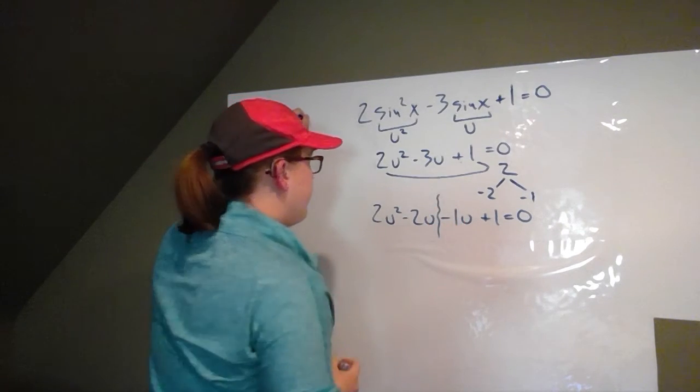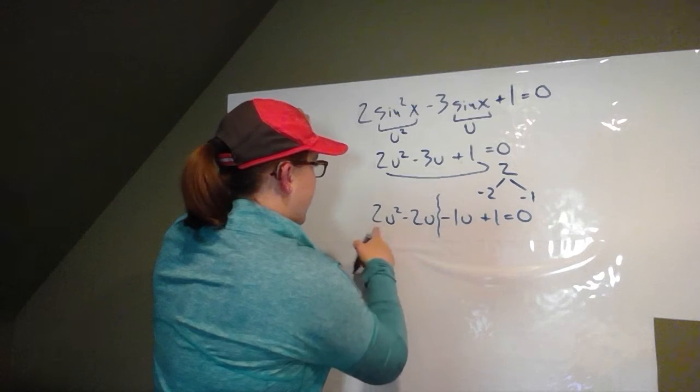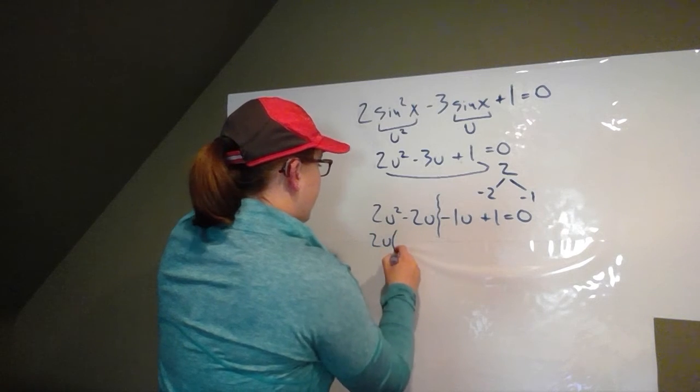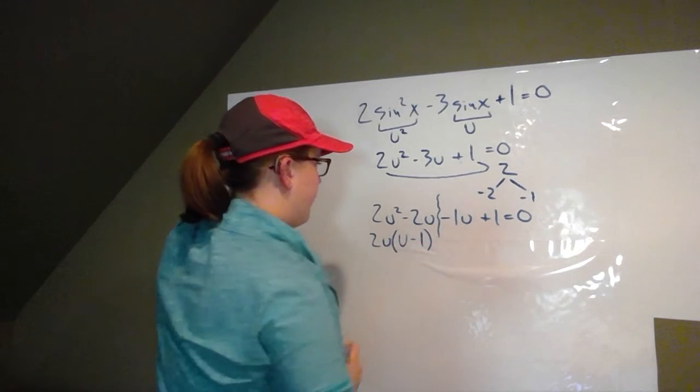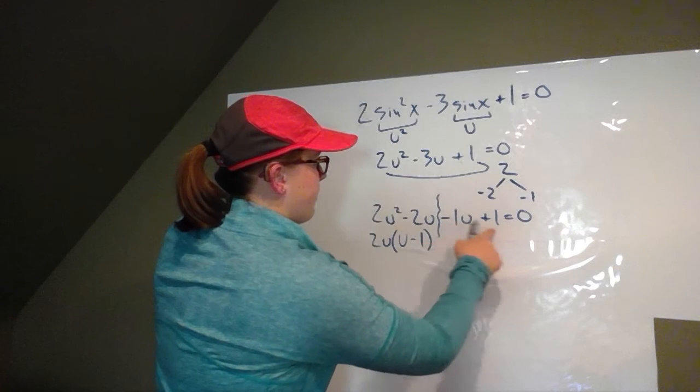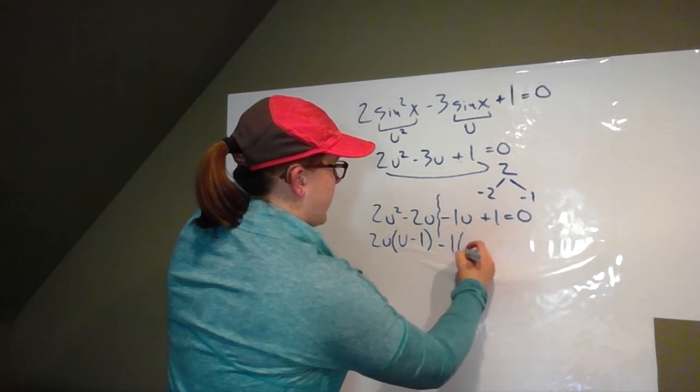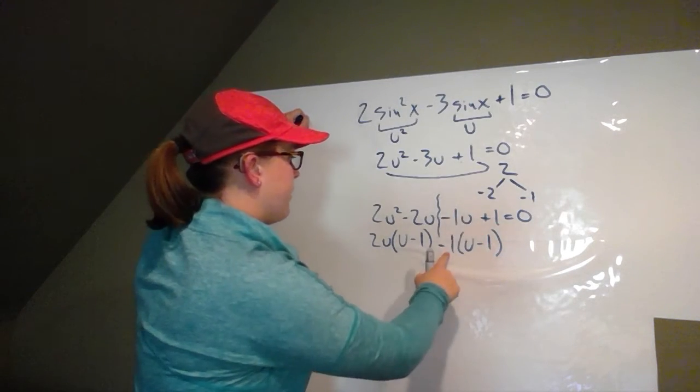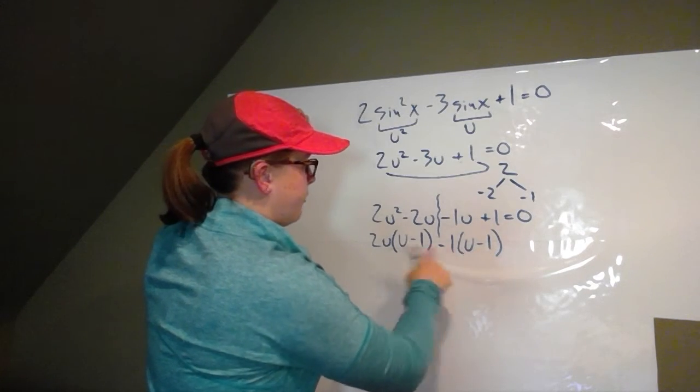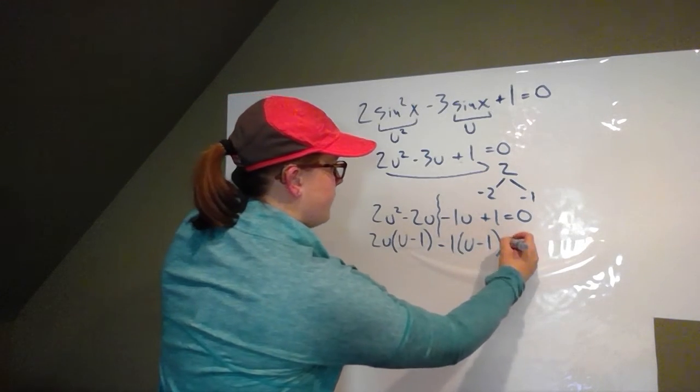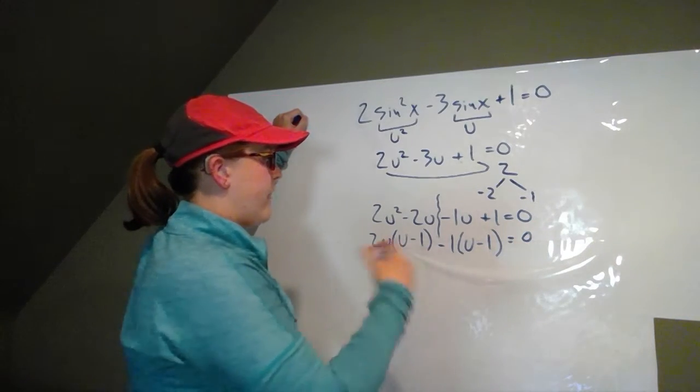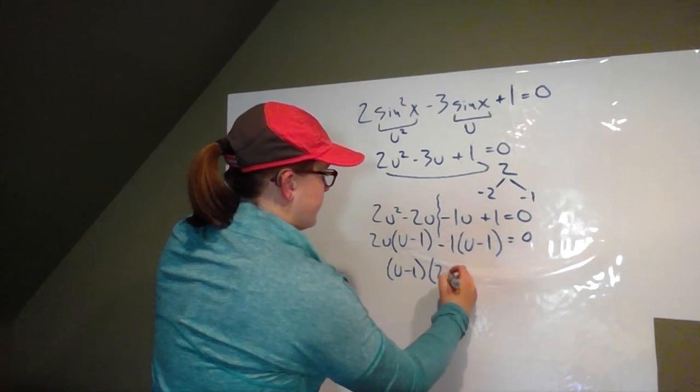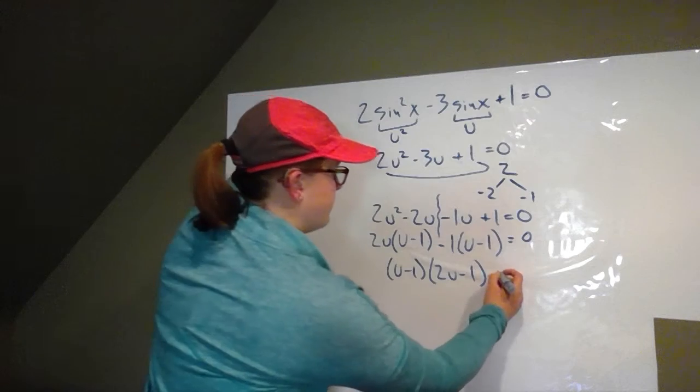Then I'm going to split down the middle. I'm going to factor out the greatest common factor here and the greatest common factor here. In this case, it's two u, and we're left with u minus one. And then I'm going to factor out a negative one here. So minus one times u minus one. Factored out a negative one because even though there's not really a GCF here, I wanted the u minus ones to match. So then I'm going to factor out that u minus one that they both have. So we get u minus one times two u minus one equals zero.